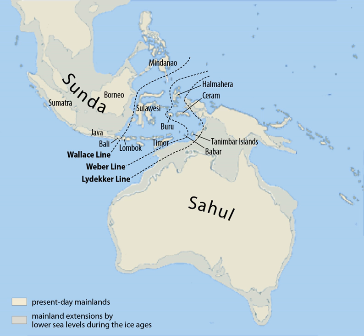In addition to the Malay Peninsula and the islands of Borneo, Java, and Sumatra, it includes the Java Sea, the Gulf of Thailand, and portions of the South China Sea. In total, the area of Sundaland is approximately 1,800,000 square kilometers.